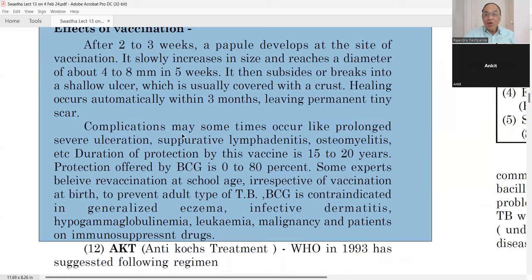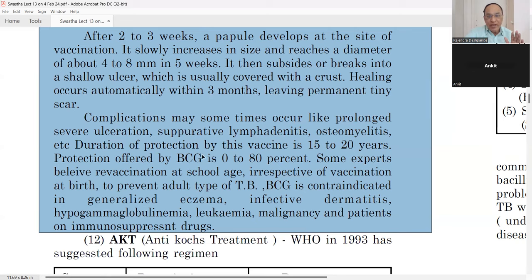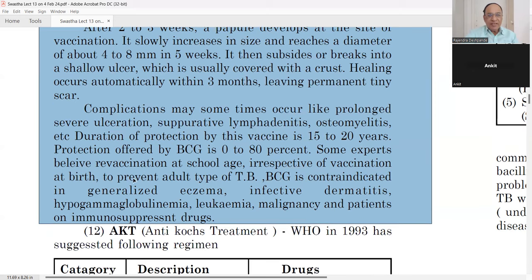Very rarely, complications occur: prolonged severe ulcer that doesn't heal, suppurative lymphadenitis with enlarged axillary lymph glands, and osteomyelitis. The duration of protection by BCG is a minimum of 15–20 years. Vaccination protection offered by BCG ranges from 0 to 80%. Some experts recommend vaccination at school age, in addition to vaccination at birth, to prevent adult TB.